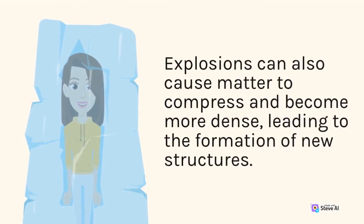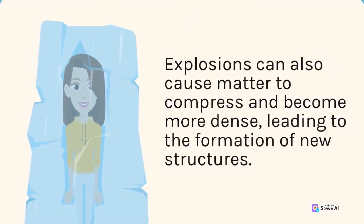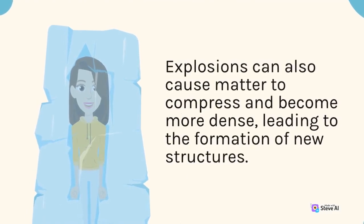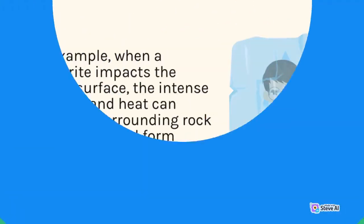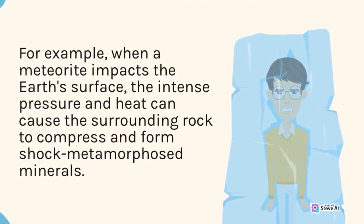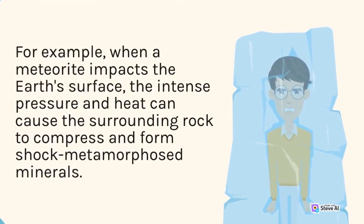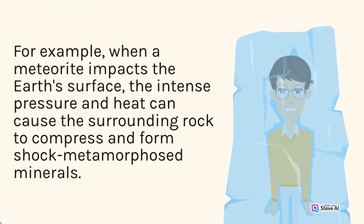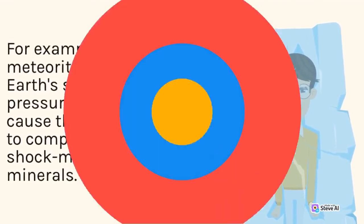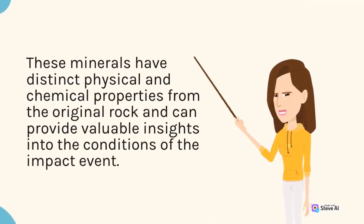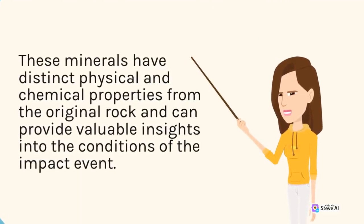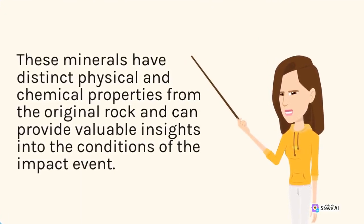Explosions can also cause matter to compress and become more dense, leading to the formation of new structures. For example, when a meteorite impacts the Earth's surface, the intense pressure and heat can cause the surrounding rock to compress and form shock metamorphosed minerals. These minerals have distinct physical and chemical properties from the original rock and can provide valuable insights into the conditions of the impact event.